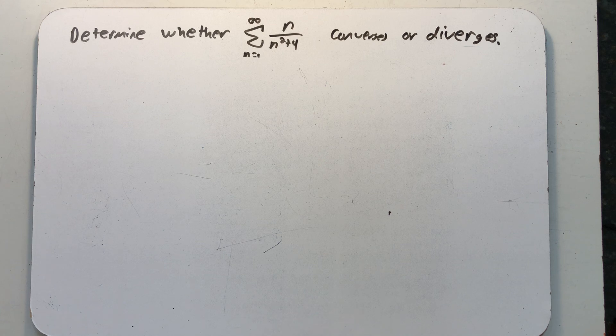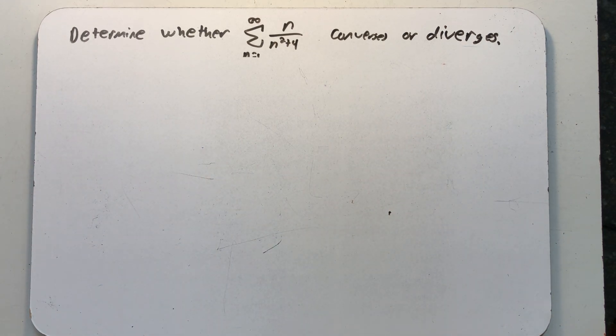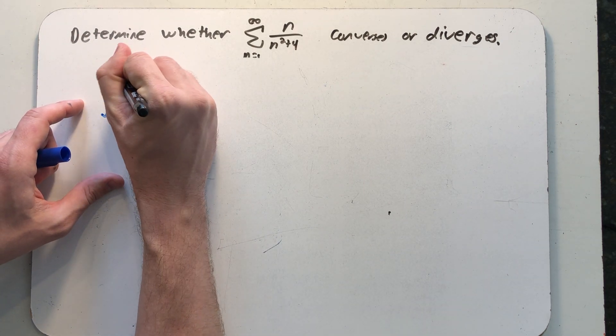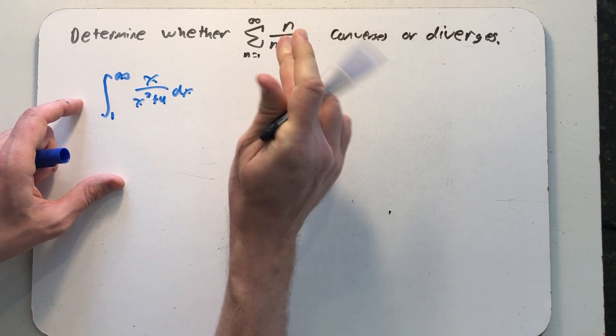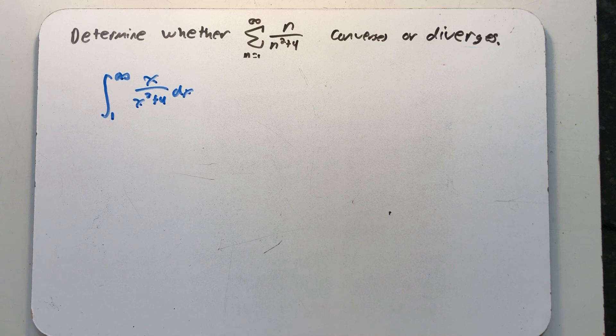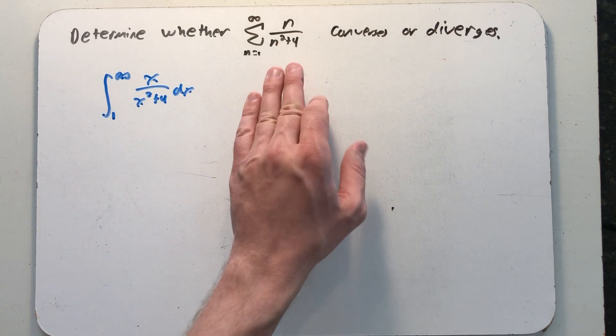So I'm going to use the integral test to show that this either converges or diverges, but at the end of the video I'm going to show you another way to answer just this question because it's always good to remind ourselves that more than one of our convergence and divergence tests might apply to a problem. But to get started, I know that this improper integral and this series either converge or diverge the same way. So they have the same behavior. If this improper integral converges, so does this series. If this improper integral diverges, so does the series.